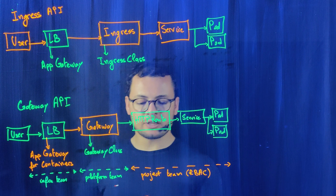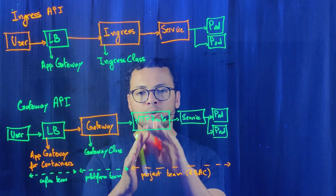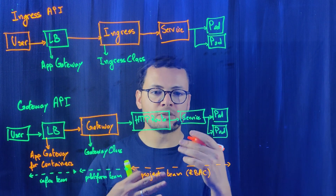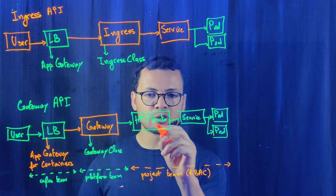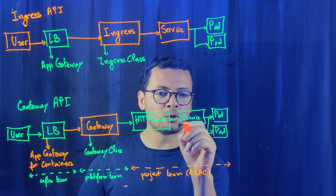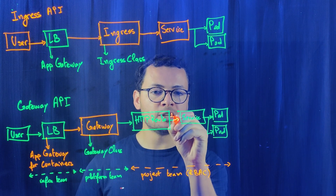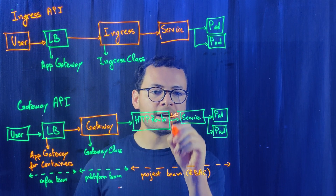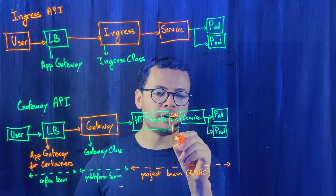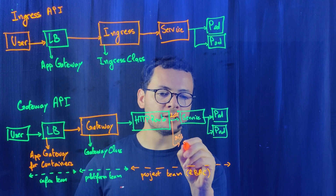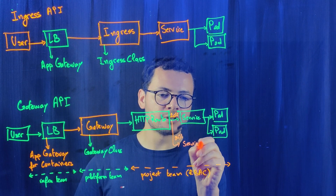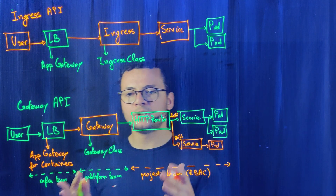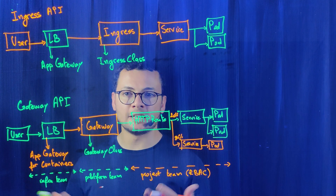A second advantage is that with the Gateway and HTTPRoute, you can have advanced features like traffic splitting. For example, I can define an HTTPRoute that sends 20% of traffic to service one and 80% of traffic to a second instance of my service with its own pods. It also supports mTLS, RBAC model, and so on.